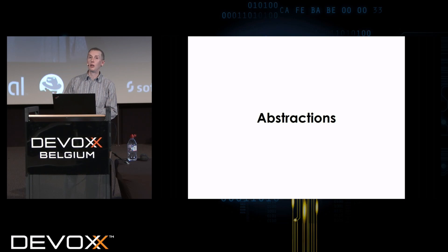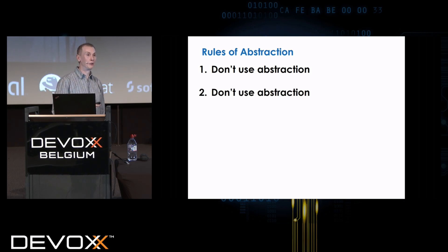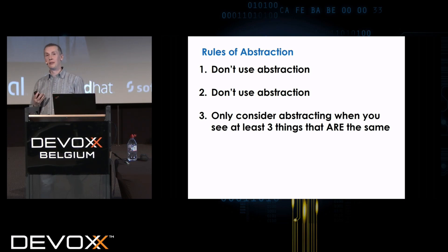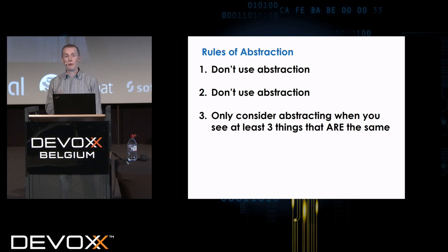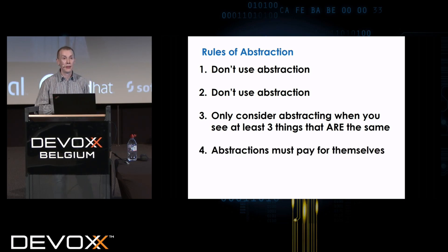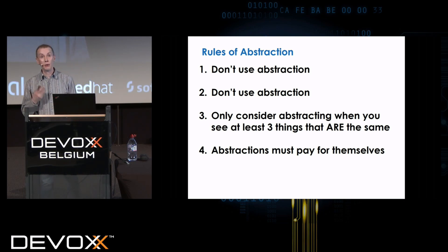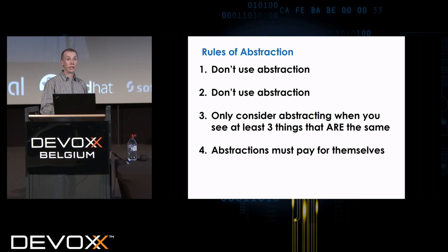One I keep hearing a lot is abstraction — and I've got a very simple way of looking at it now. My rules of abstraction: rule number one, don't do abstraction; rule number two, don't do abstraction. Joking aside, being a bit more serious: we can abstract, but we should be seeing at least three things that are something. If we're going to use inheritance and polymorphism, we should have a proper is-a relationship — not a 'sort of maybe a bit like that' relationship just because it's convenient right now. We need genuine is-a relationships. And all abstractions have a cost — does it pay back for the cost of doing it?